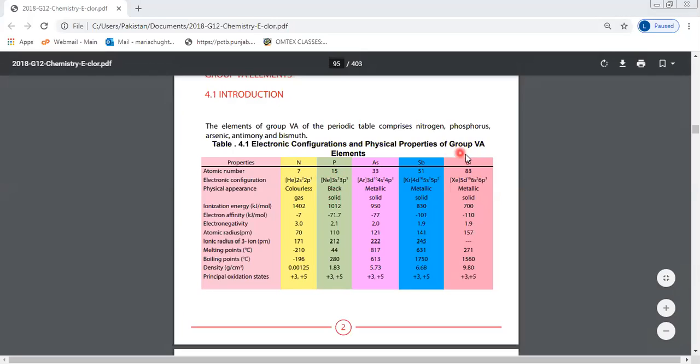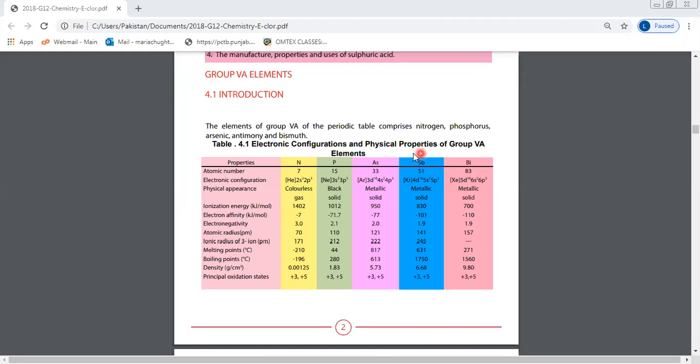It's Group 5, so the outermost shell electronic configuration has 5 electrons: ns² np³. For nitrogen in the second period, it's 2s² 2p³, and for phosphorus in the third period, it's 3s² 3p³, meaning px, py, and pz each have one electron.